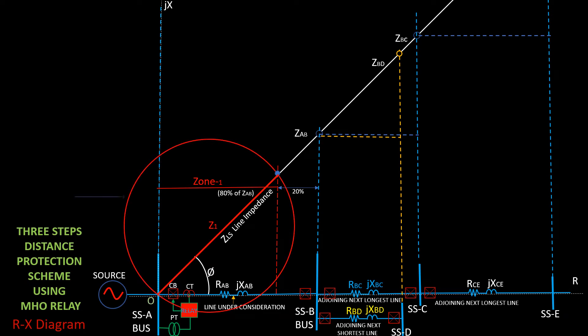Boundary 1, the circular characteristics of the relay based on zone 1 impedance. Zone 1 protection will operate when measured impedance of the relay falls within this circular boundary 1.